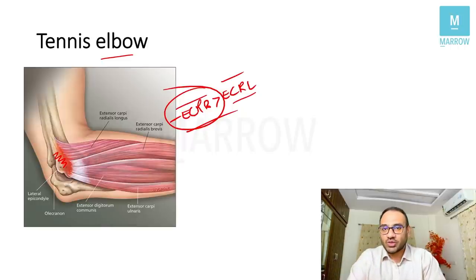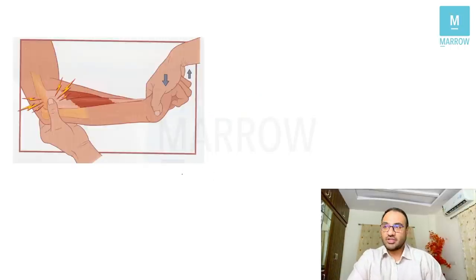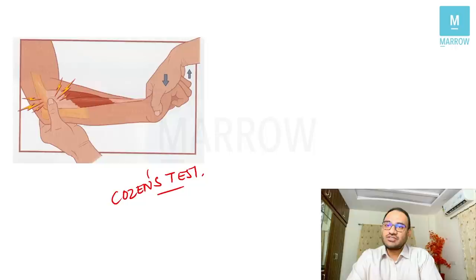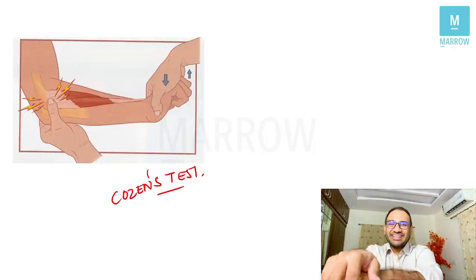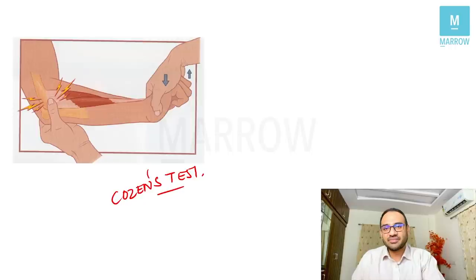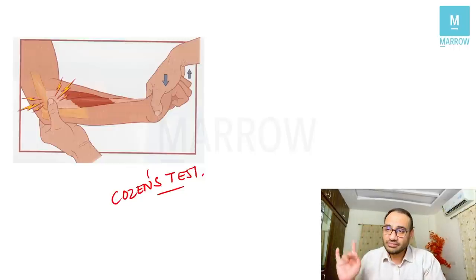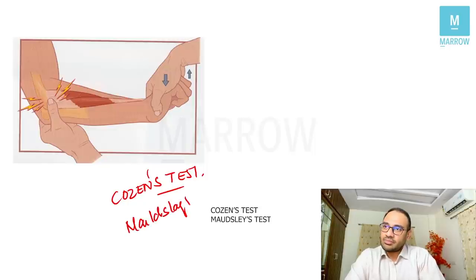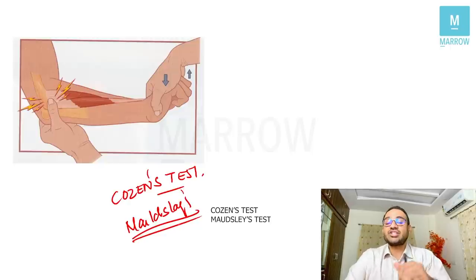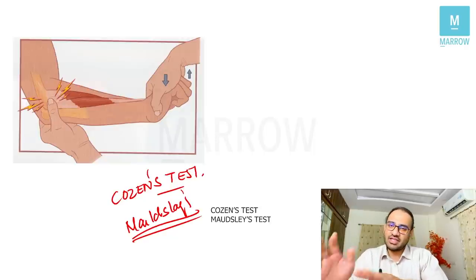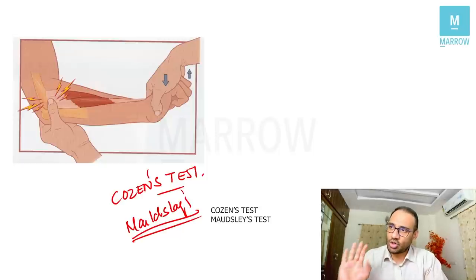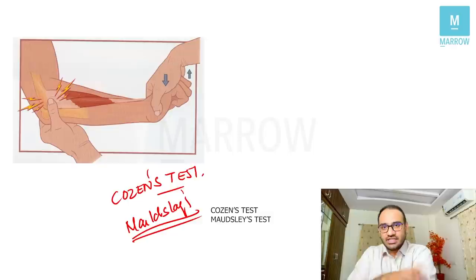The clinical test to diagnose tennis elbow is Cozen's test. You ask the patient to extend the wrist against resistance; when they do so, pain and symptoms are reproduced at the lateral epicondyle. Another test is Maudsley's test — instead of extending the wrist, you ask the patient to extend the middle finger and the same symptoms are reproduced. So either Maudsley's test or Cozen's test.